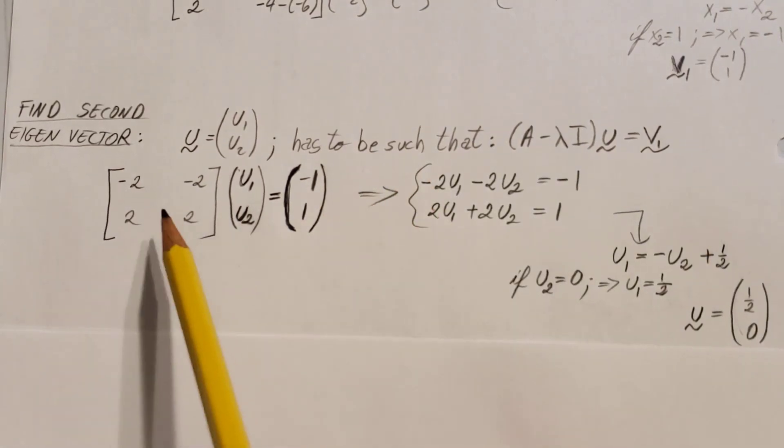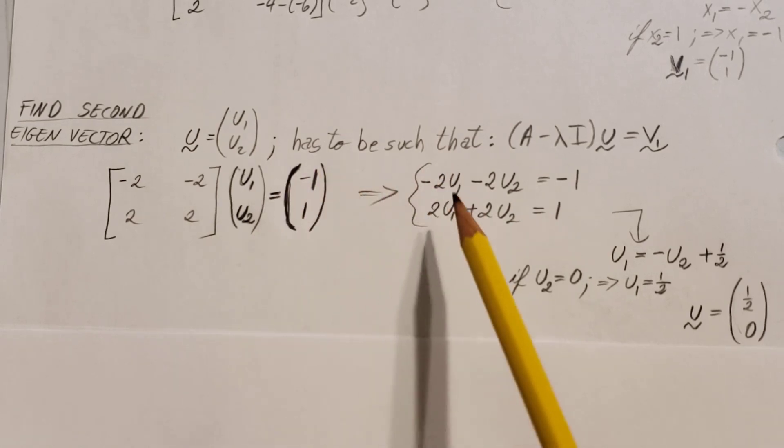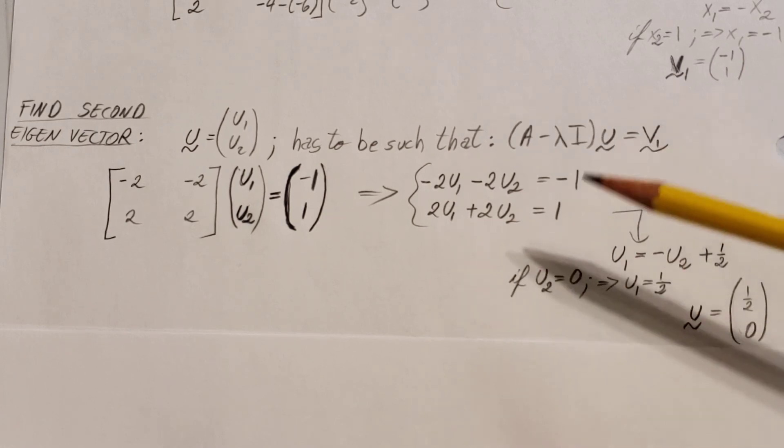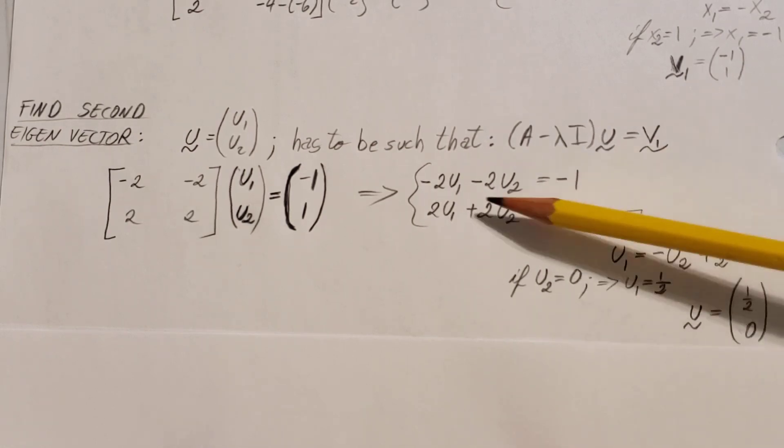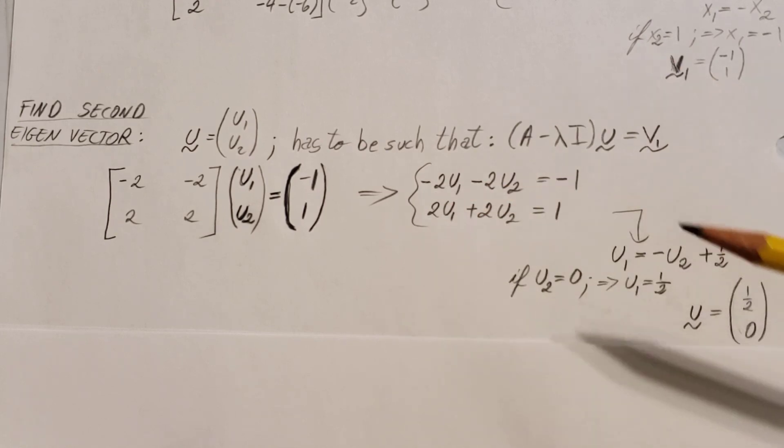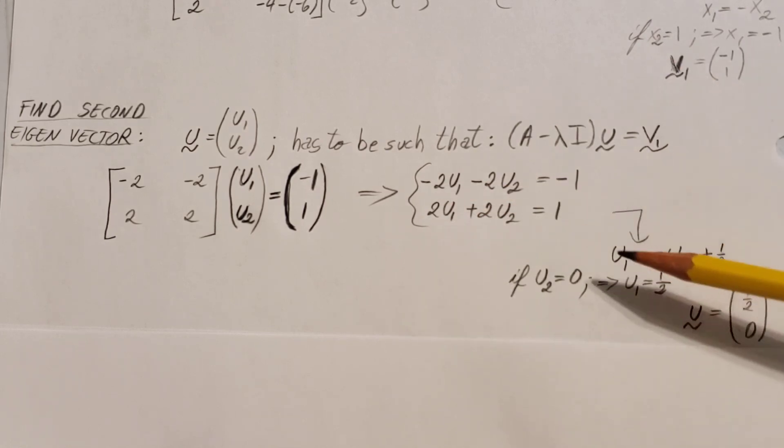Now I'm going to go ahead and solve this. We can see again that when we extract it and make two nice equations, again, they are just simply multiples of each other. They are the same thing except the minus. So we're going to ignore one of them and use one equation and determine that u1 equals negative u2 plus 1 half.